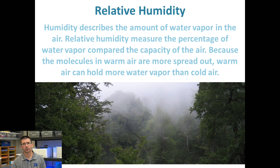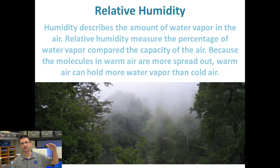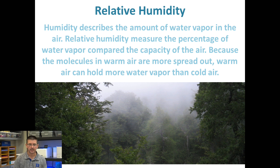Humidity is another important factor that determines weather, because it deals with the amount of water vapor in the air. Things like precipitation — the things we talked about in the water cycle — can affect humidity. As water evaporates from Earth, it goes into the atmosphere, which increases humidity. As rain falls, that takes some water out of the air, which decreases humidity.